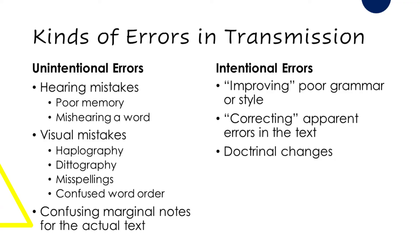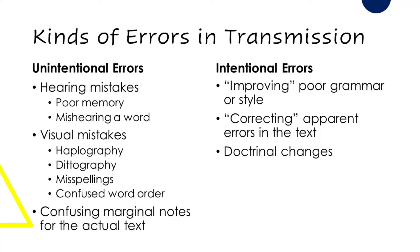We can distinguish unintentional errors from intentional errors, where a scribe thinks he's improving what he regards as poor grammar or style, or correcting apparent historical errors. Other times the text seemed doctrinally suspicious and a scribe might try to correct it to make it better. All of these are reasons why errors get introduced into the manuscript tradition.